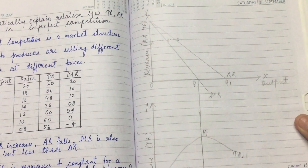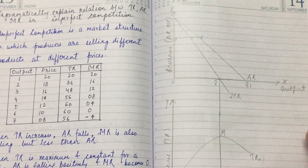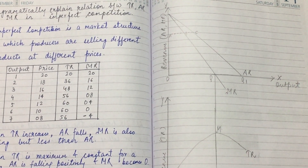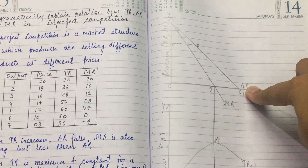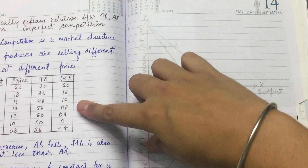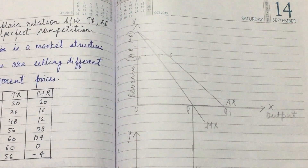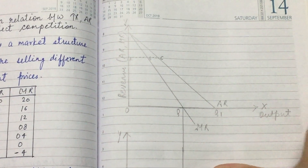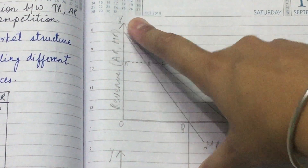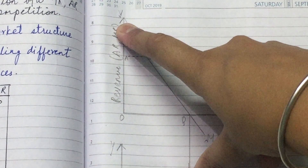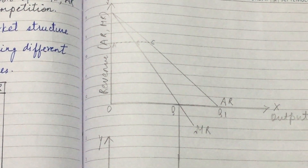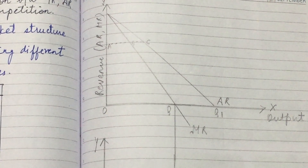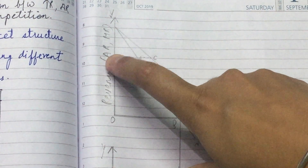Now one important thing: you don't see AR separately in the table because in imperfect competition, price is always equal to AR. The same price is always equal to average revenue, so there is no need to show it separately. Now we have to draw the curve which includes AR and MR — we measure both AR and MR on the Y-axis.